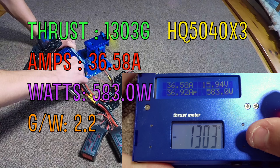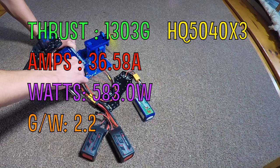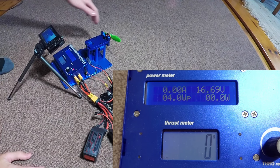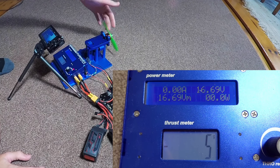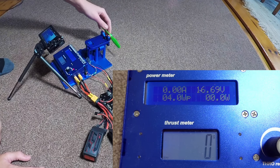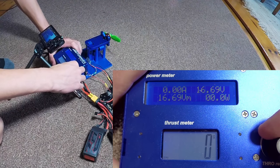Here we are on a two-bladed prop, the DAL 5045 Bullnose V2. Let's crank it up.